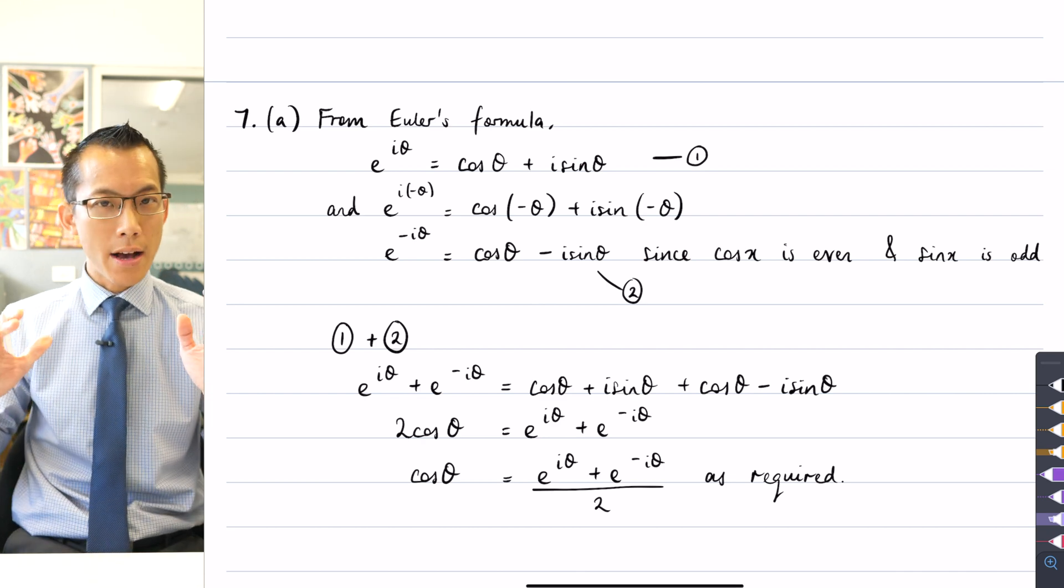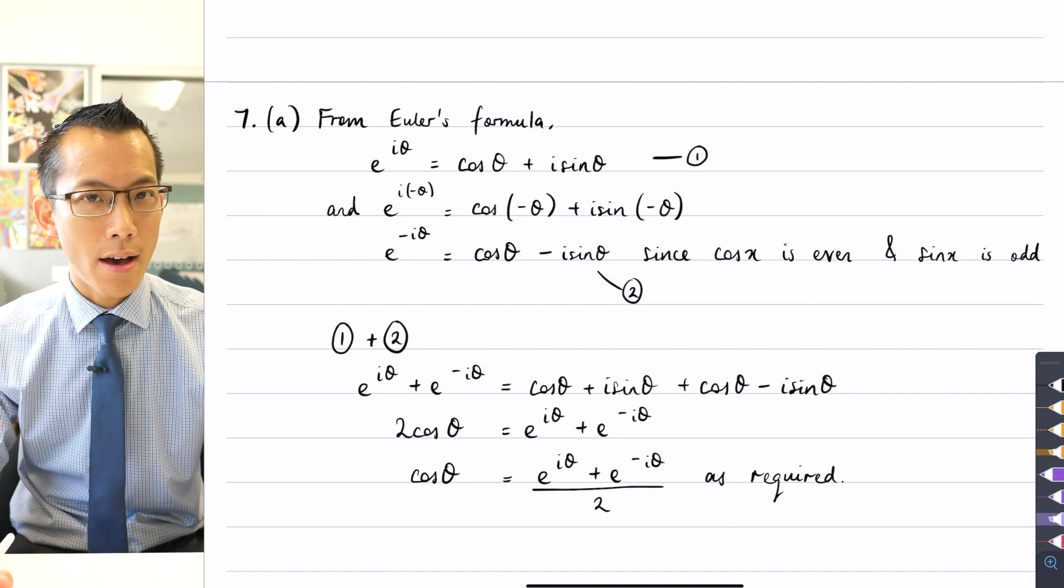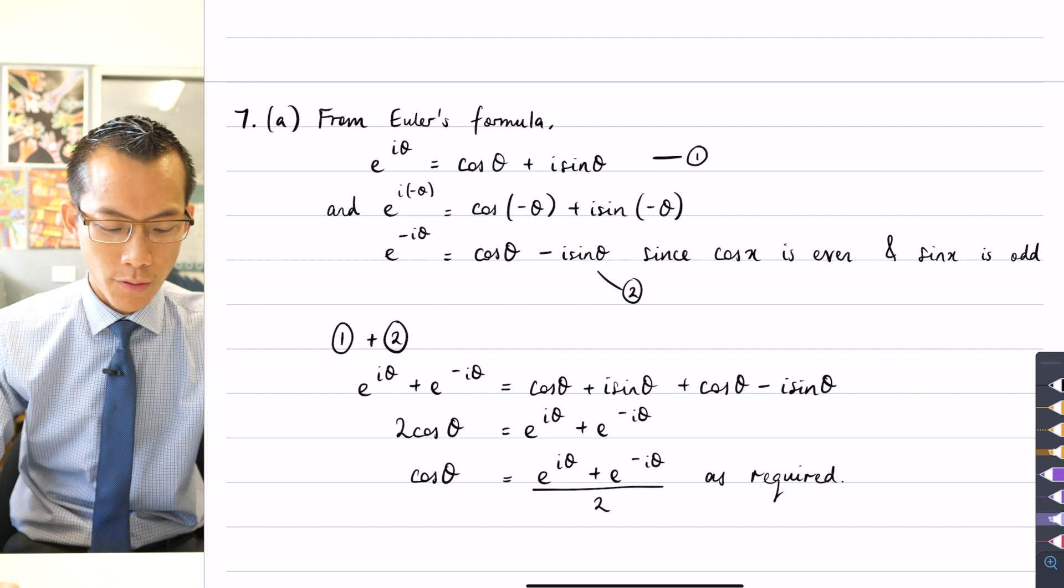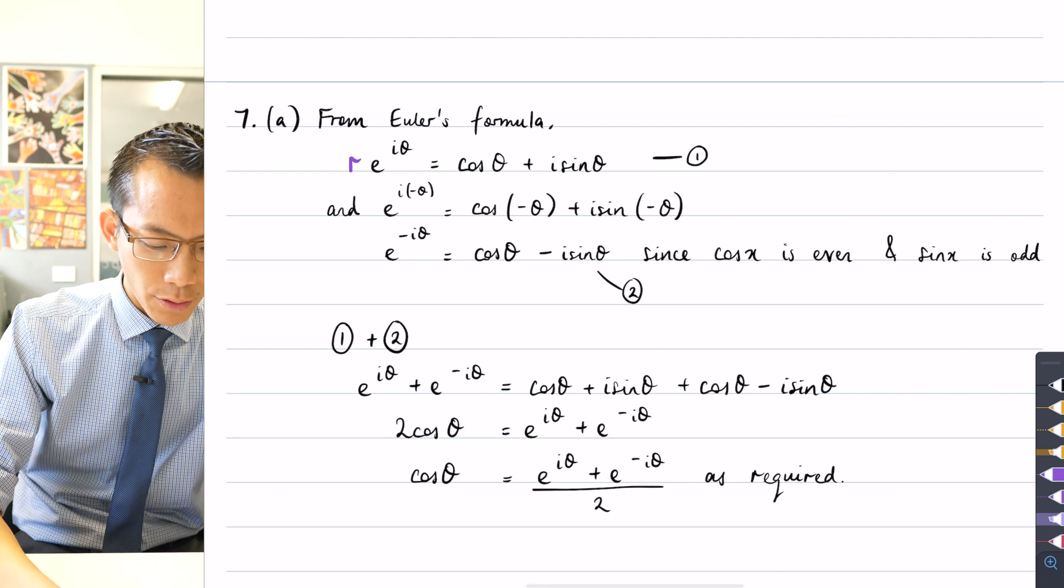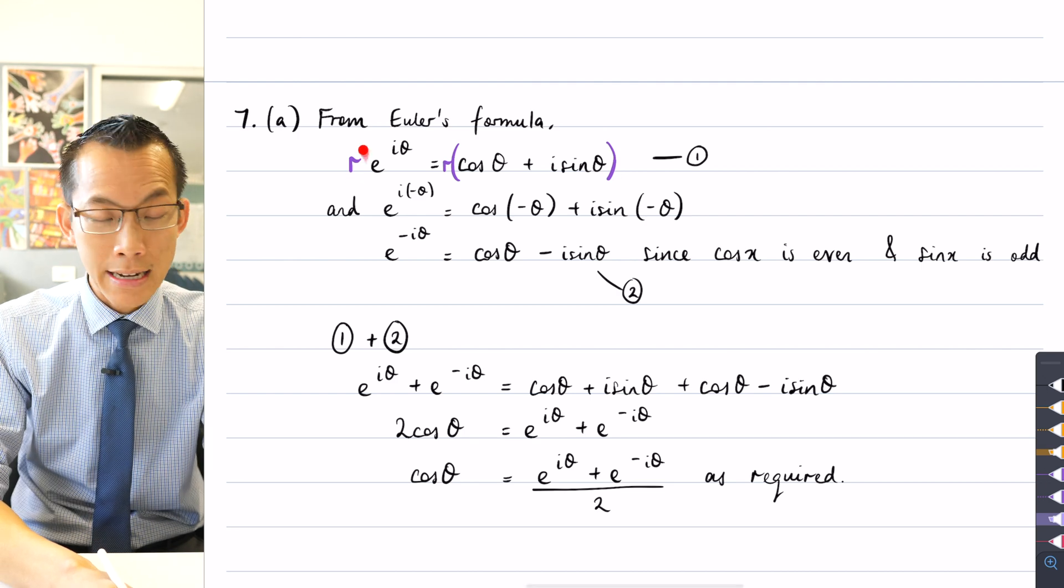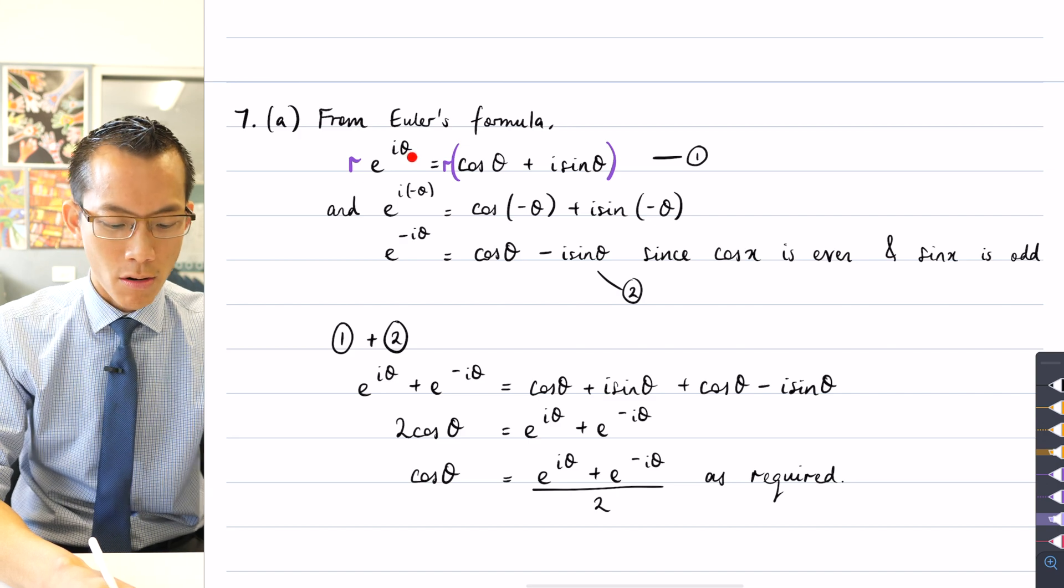And by the way, this is one of the reasons why several students in an earlier question forgot that when you have a complex number, an arbitrary complex number in exponential form, it should have an r out the front, because this enables you to be any distance from the origin, and any argument around the origin.